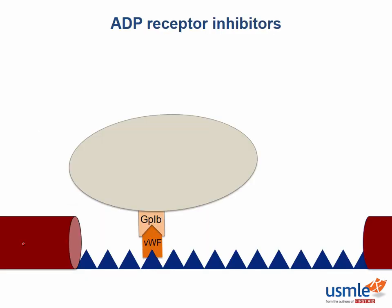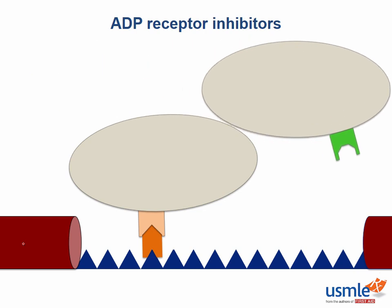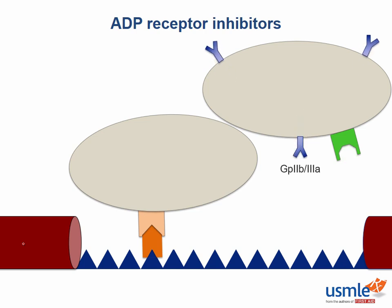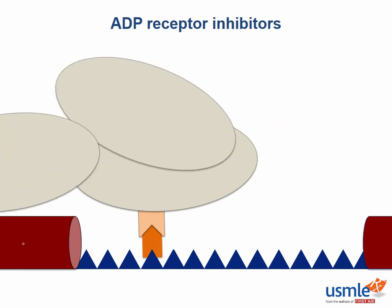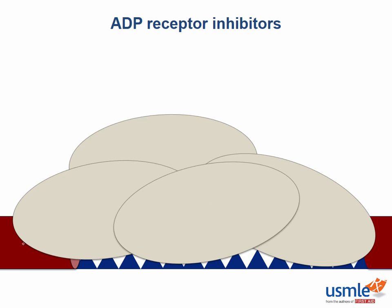For a quick review, platelets first adhere to injured collagen by binding von Willebrand factor via glycoprotein 1b. This leads to the release of calcium and ADP from the platelet. This ADP then binds an ADP receptor of another platelet, which leads to activation and expression of glycoprotein 2b3a receptors. This glycoprotein 2b3a receptor binds fibrinogen and other glycoprotein 2b3a receptors and crosslinks other platelets, forming the platelet plug.